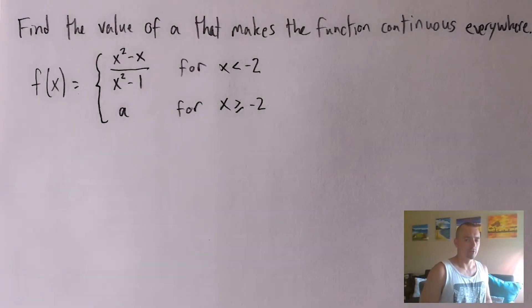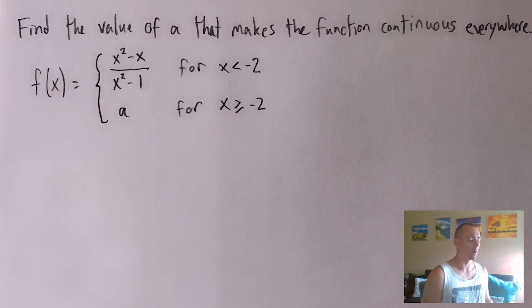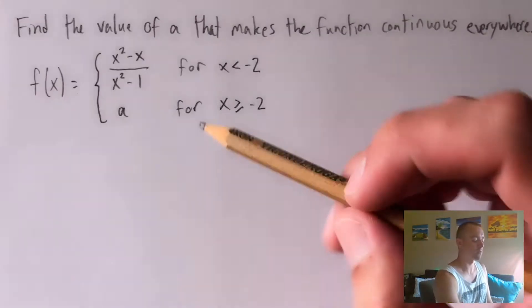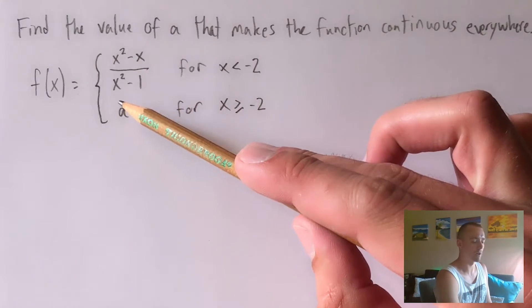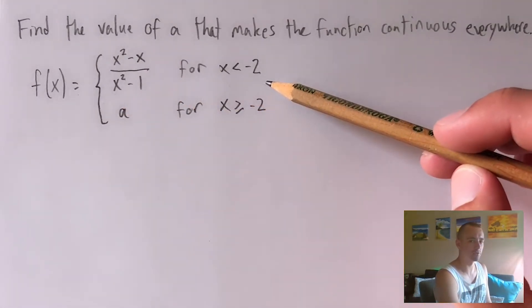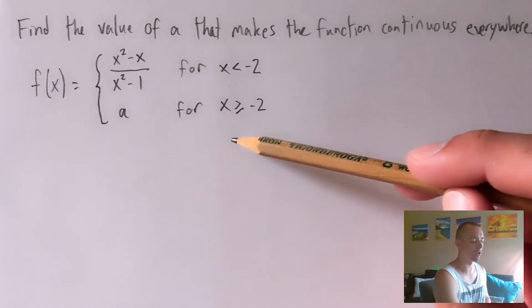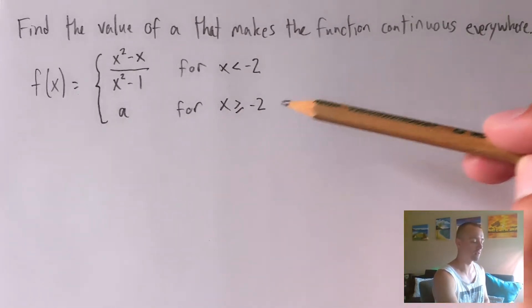Here's the problem we're going to be going over to show you the shortcut in order to find the value of A that makes this function continuous everywhere. The function is f of X, a piecewise function defined as X squared minus X all over X squared minus one whenever X is less than negative two, and then just the constant A for all X greater than or equal to negative two.